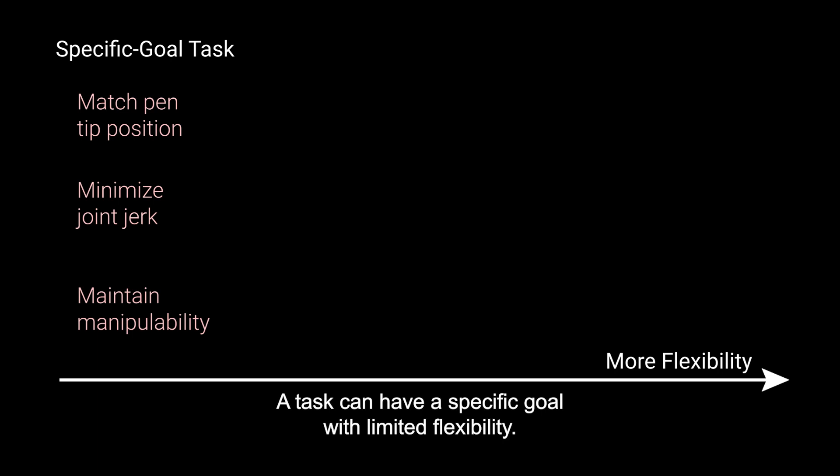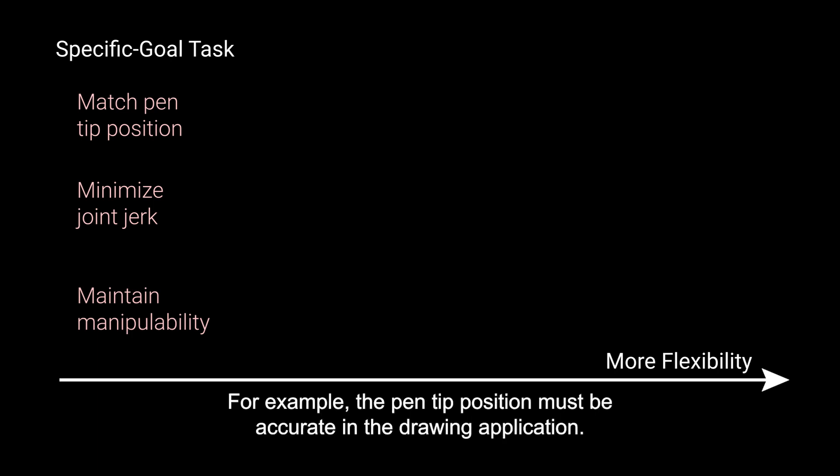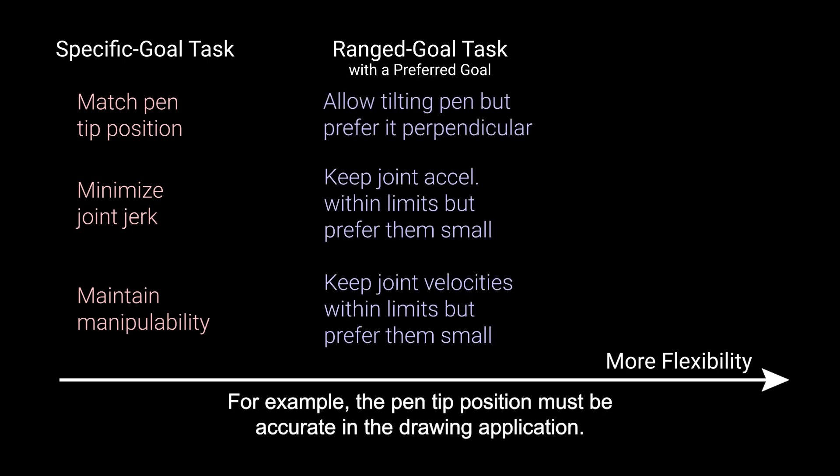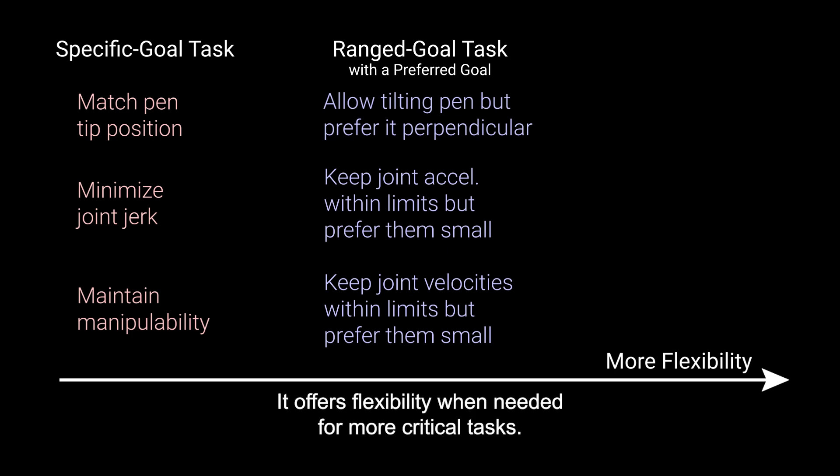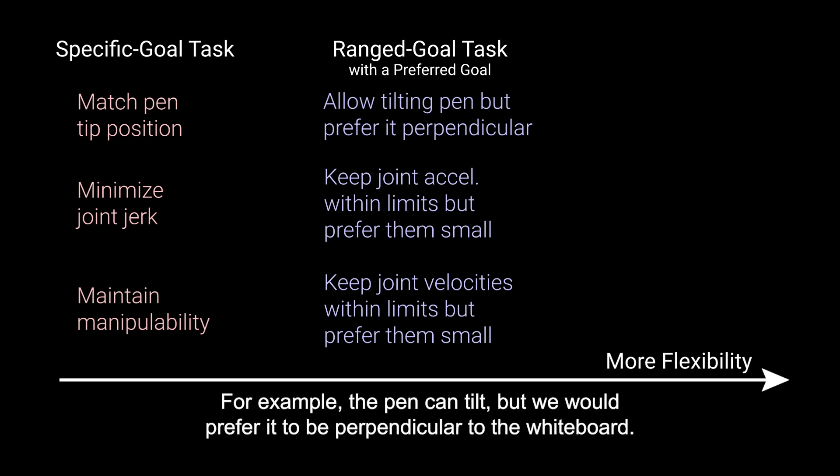More formally, we consider each kinematic requirement as a task and classify the tasks into three categories according to the flexibility they have. A task can have a specific goal with limited flexibility — for example, the painted position must be accurate in the drawing application. Moreover, a task can have a range of acceptable goals while showing a preference for a specific goal, offering flexibility when needed for more critical tasks.